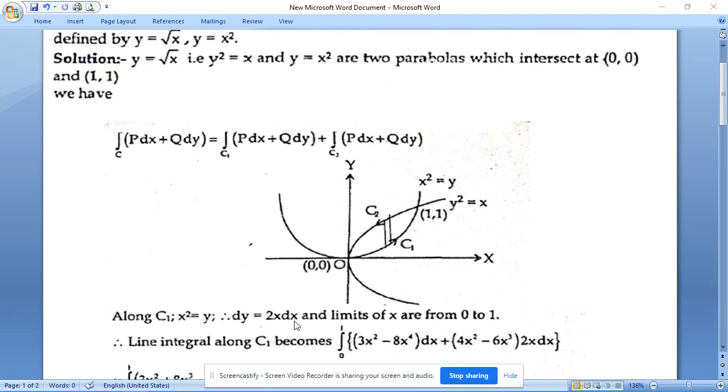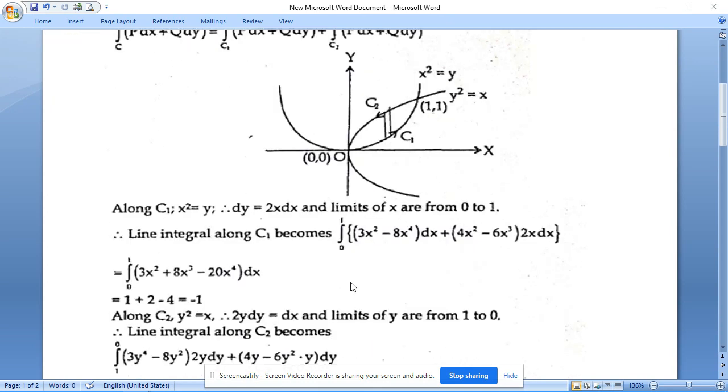Now the right-hand side order is x, so we take x limits. x varies from 0 to 1. With these limits, the line integral can be calculated easily, just replacing y as x² and dy as 2x dx. So it is the line integral value along C1.